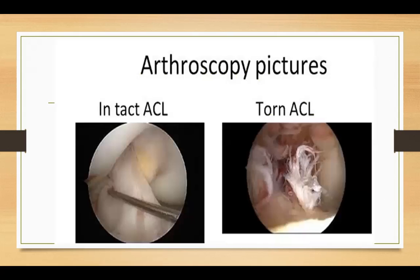In arthroscopic images, the image on the left shows the normal intact ACL, and the image on the right shows the torn ACL.